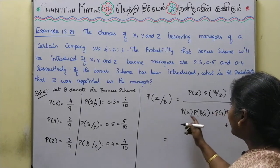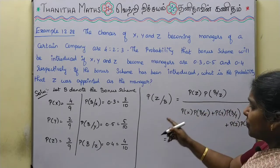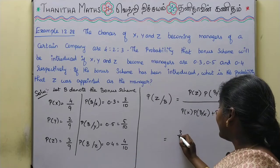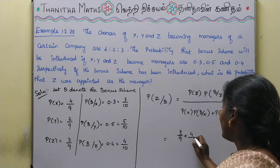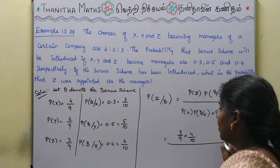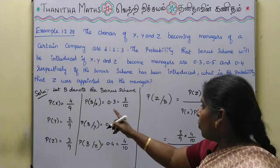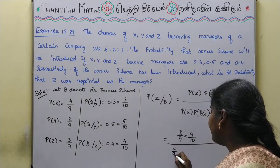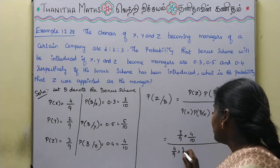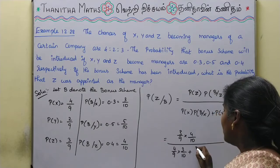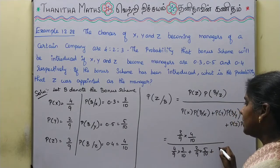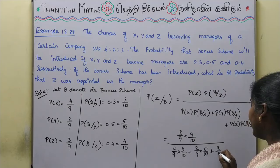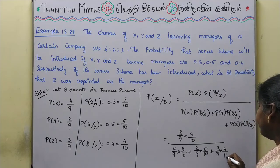Substituting values: the numerator is P of Z times P of B given Z, which is 3 by 9 into 4 by 10. The denominator is 4 by 9 into 3 by 10, plus 2 by 9 into 5 by 10, plus 3 by 9 into 4 by 10.